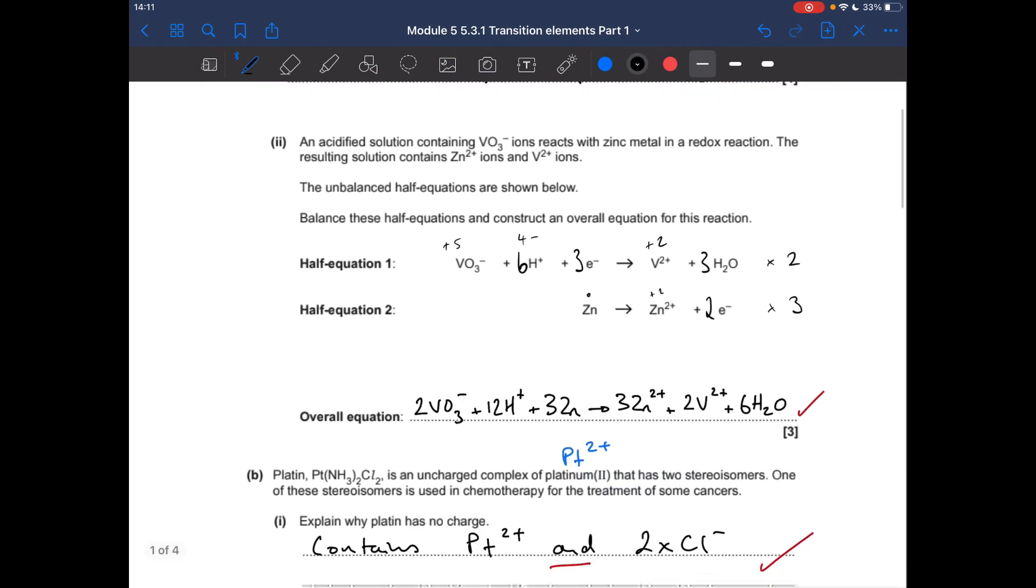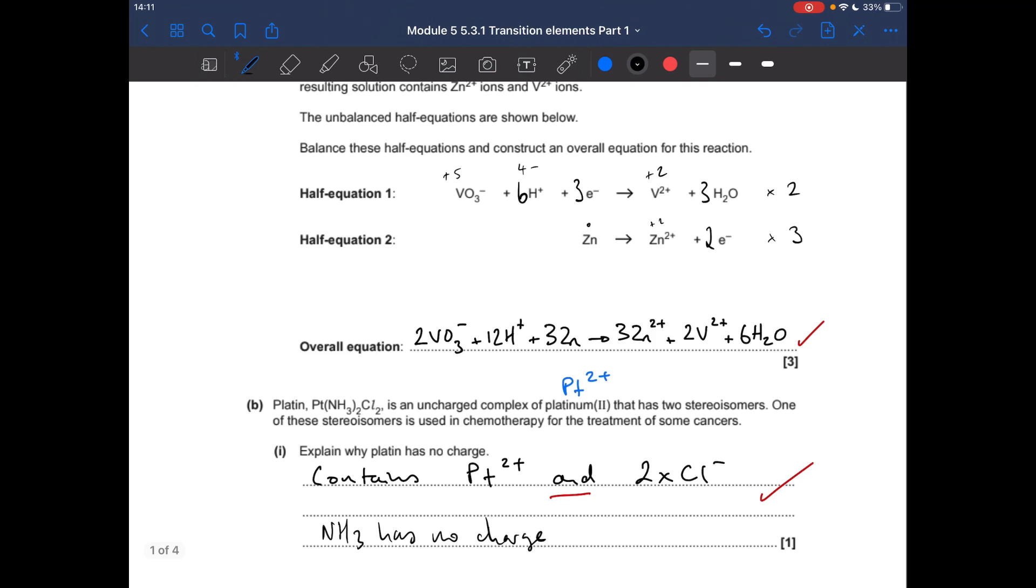Part B now, explain why platen has no charge. Well, if we think about what it contains, it contains a Pt2 plus. It contains Cl2, so 2 chloride ions, so their charges will cancel each other out. The ammonia has no charge anyway, so you didn't actually need to mention that.